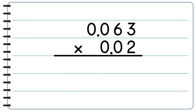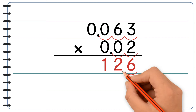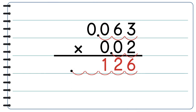Let's try another example: 0.063 times 0.02. We can't use the estimation method here because the numbers are way too small, so we're going to have to use the place value method. First we multiply. Count the digits after the decimal point in each factor and sum them up: 1, 2, 3, 4, 5. Here we have 5 digits. We move the decimal point to the left 5 times and put zeros in the empty spaces.